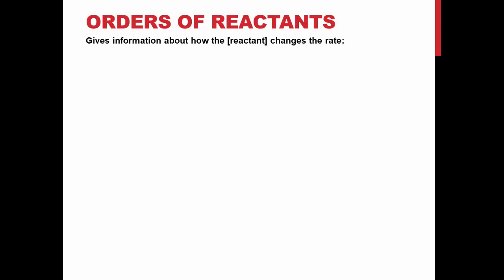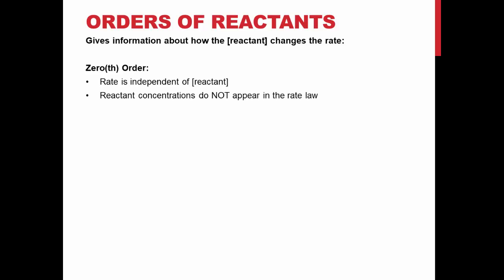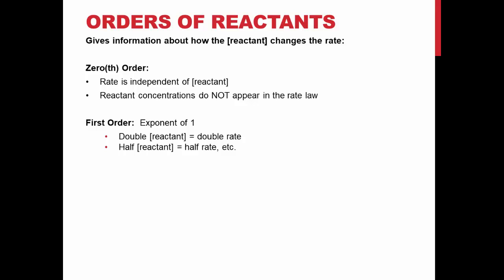Discovering the order of a reactant gives us information about how the concentration of the reactant changes the rate of the reaction. When a reactant is zeroth order, the rate is independent of the concentration of the reactant — if you varied the concentration of this reactant, you would see no difference in rate, and it has an exponent of zero, so it is not shown in the rate law. When a reactant is first order, it has an exponent of one. If you double the concentration, you double the rate; if you halve the concentration, you halve the rate — a directly proportional relationship.